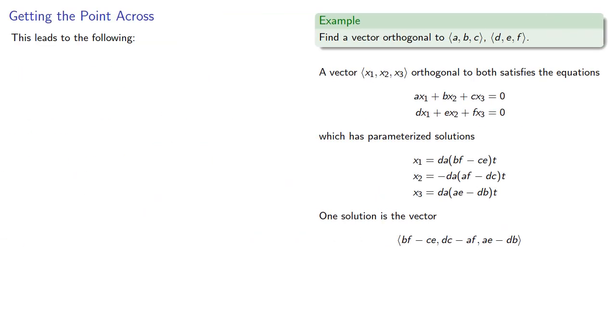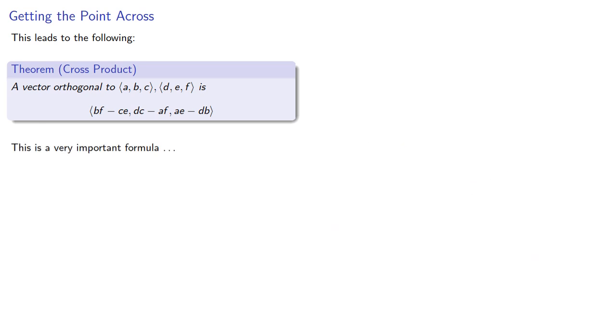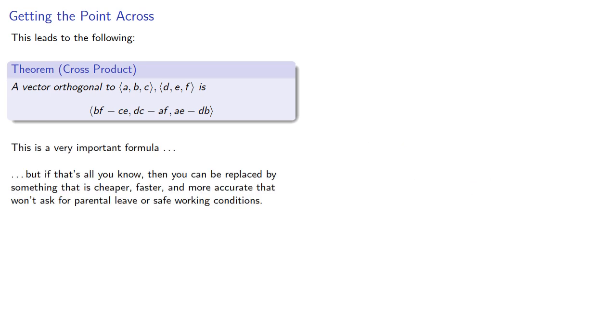Now, every mathematical formula is just a summary of all of our steps into one compact form. And so we could say that a vector orthogonal to these two vectors is—this is a very important formula. But if that's all you know, then you could be replaced by something that is cheaper, faster, and more accurate, that won't ask for parental leave or safe working conditions. Remember, understand concepts. Don't memorize formulas.